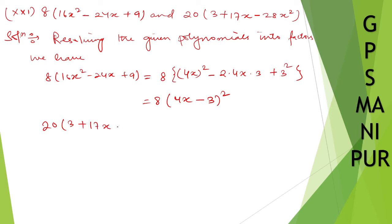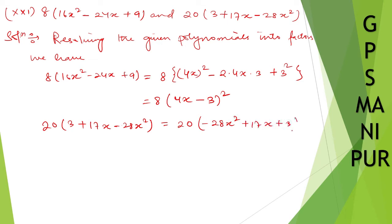Next is 20 into 3 plus 17x minus 28x², which I rewrite as 20 into minus 28x² plus 17x plus 3. To factor this, I need to split the middle term. So 28 multiplied by 3 gives us the product.